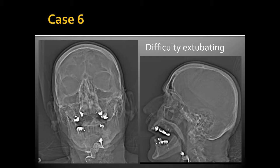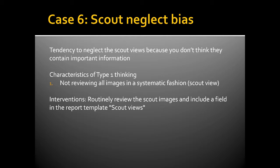Case 6 involves a patient who had difficulty extubating over about 10 days, during which he had multiple head CTs and chest x-rays. It isn't until a radiologist reviews the scalp view that she determines he has an aspirated dental plate, likely contributing to his extubation difficulty. This finding was not imaged on the chest x-rays and was not visible on the actual CT head images — which is why it was missed across multiple studies, as the scalp view covers a larger field of view. This is an example of scalp neglect bias — the tendency to neglect scalp views because you don't think they will contain important information. The Type 1 characteristic is not reviewing all images in a systematic fashion. Interventions include routinely reviewing scalp images and adding a dedicated scalp views field to your report template.